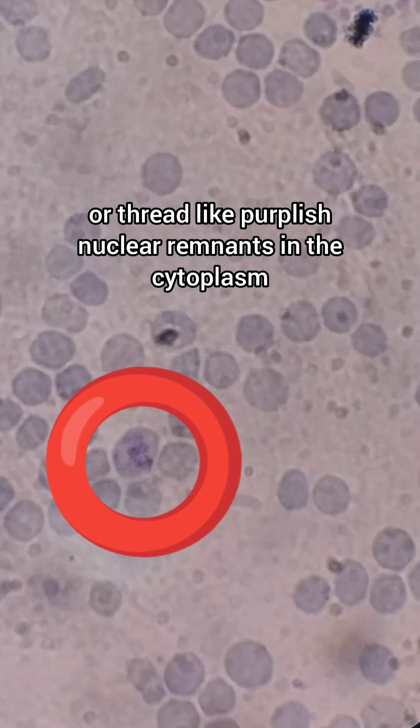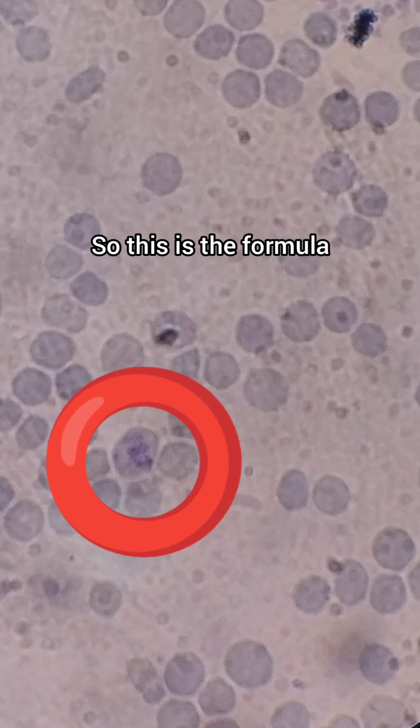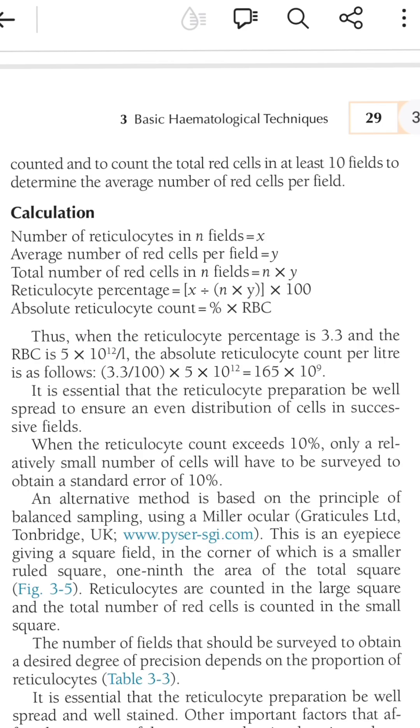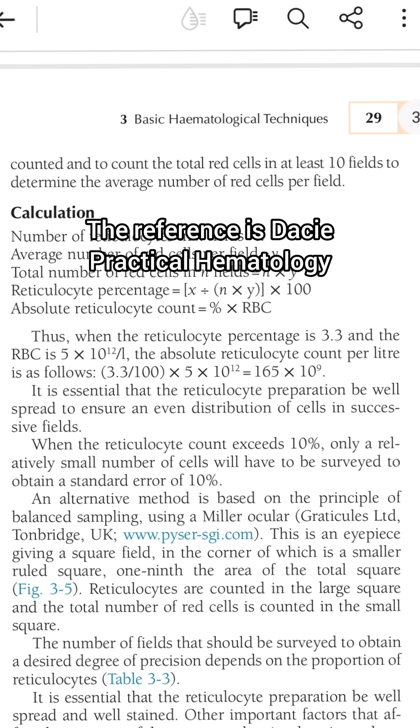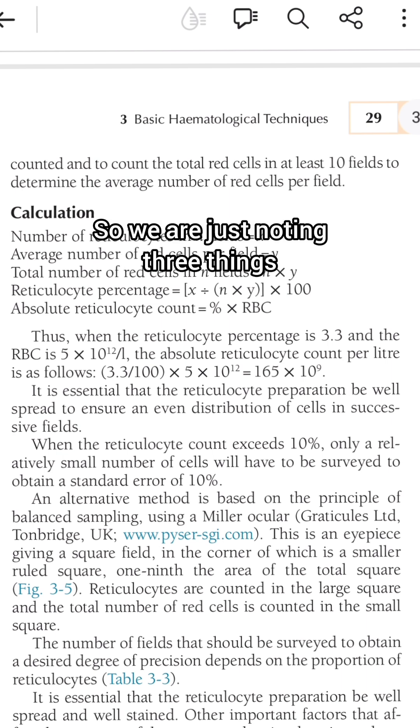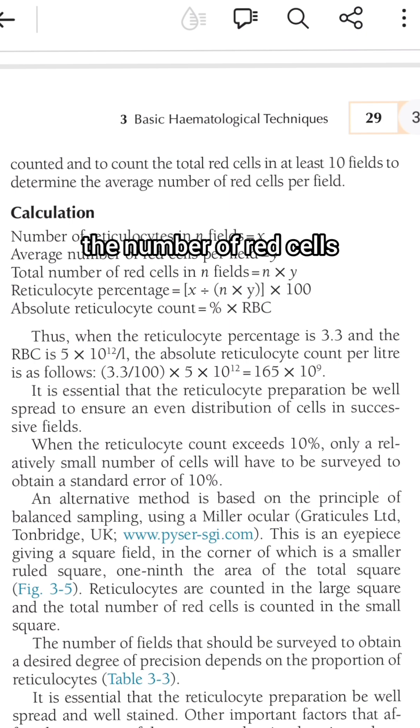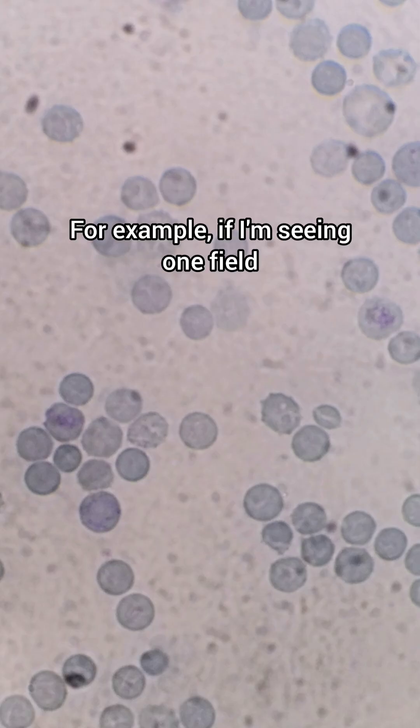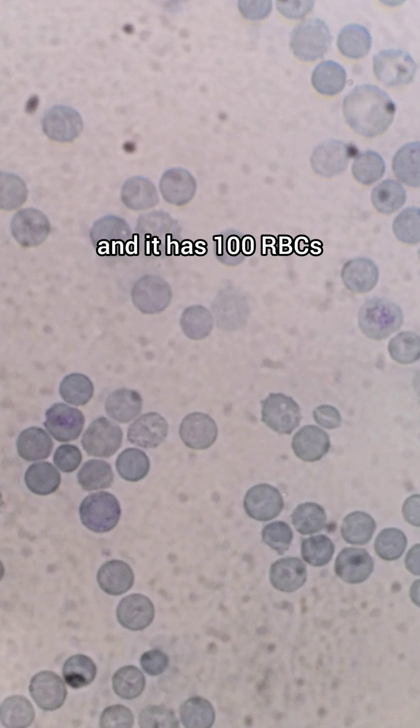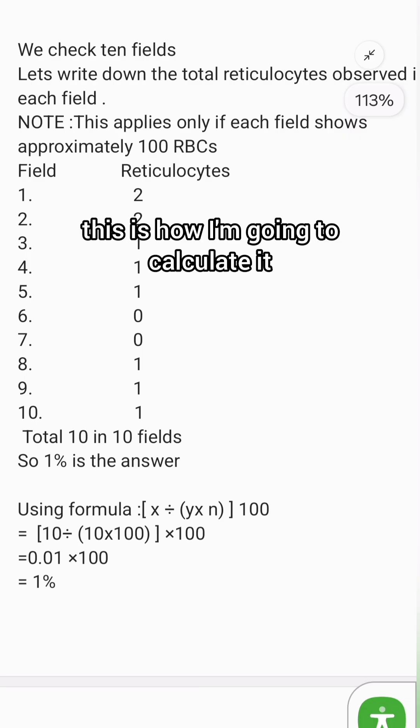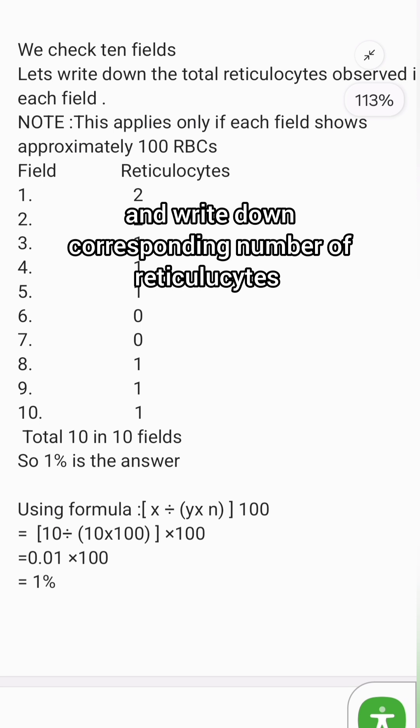This is the formula which we will use for calculation. The reference is Dacie's Practical Hematology. We are noting three things: the number of reticulocytes in one field, the number of red cells, and total red cells in a field. For example, if I'm seeing one field and it has 100 RBCs, this is how I'm going to calculate it. You can simply note each field and write down the corresponding number of reticulocytes.